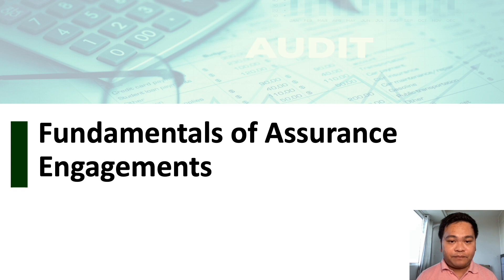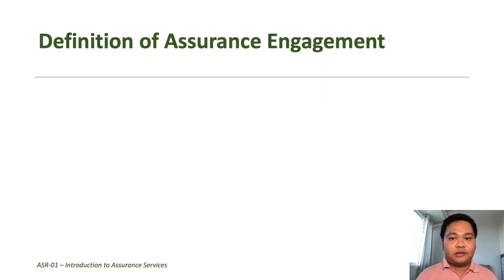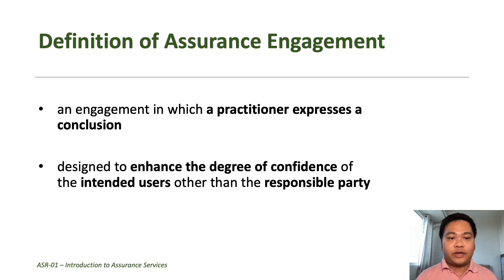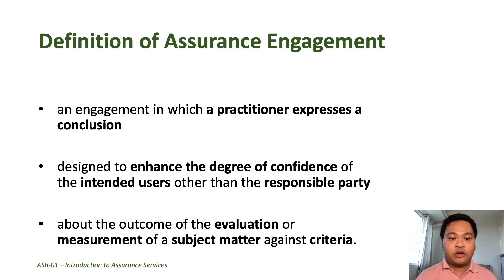In this section we will discuss the nature and definition of an assurance engagement, including the essential elements of an assurance engagement. An assurance engagement is defined as an engagement in which a practitioner expresses a conclusion designed to enhance the degree of confidence of the intended users, other than the responsible party, about the outcome of the evaluation or measurement of a subject matter against criteria.